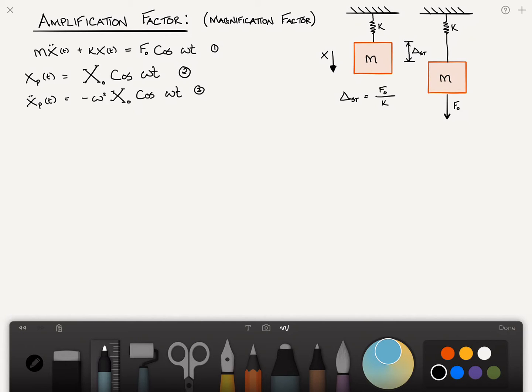We then substitute 2 and 3 into equation 1, and we end up with, after a bit of algebra, minus omega squared m plus k times x zero times cosine of omega t is equal to the right-hand side, which is f sub zero, cosine omega t.